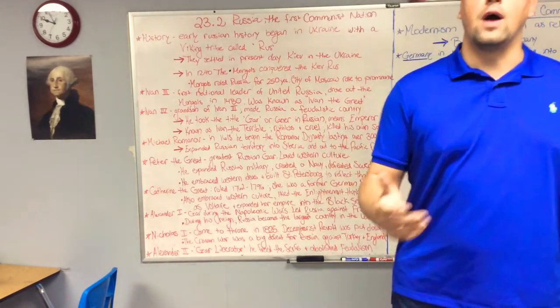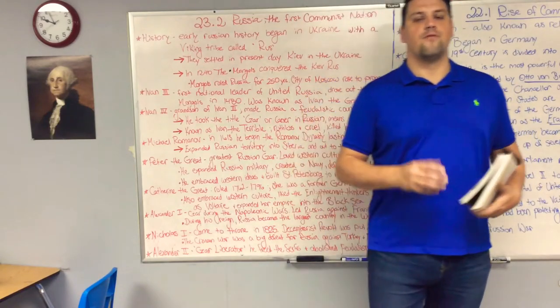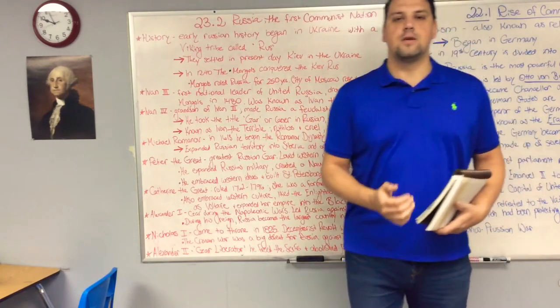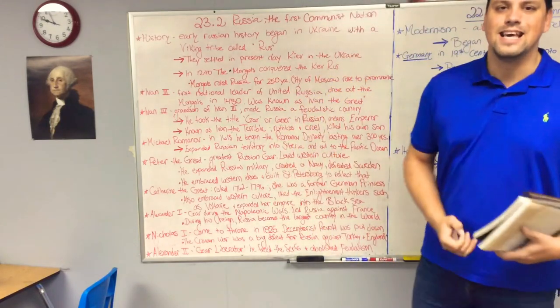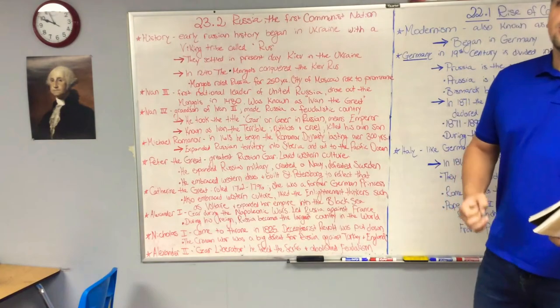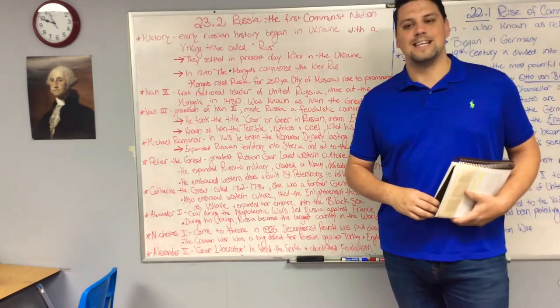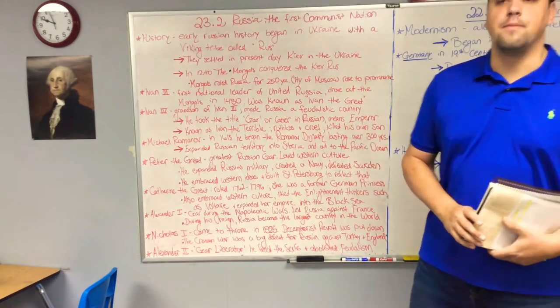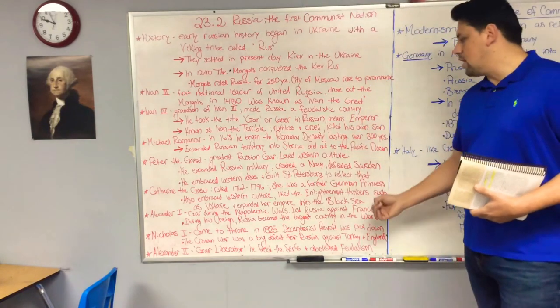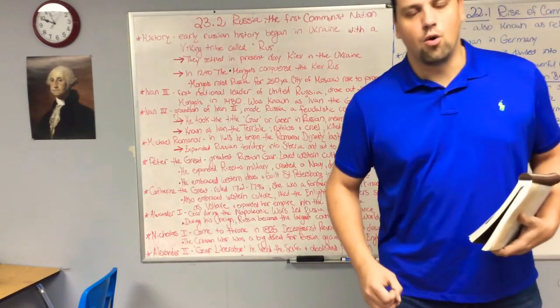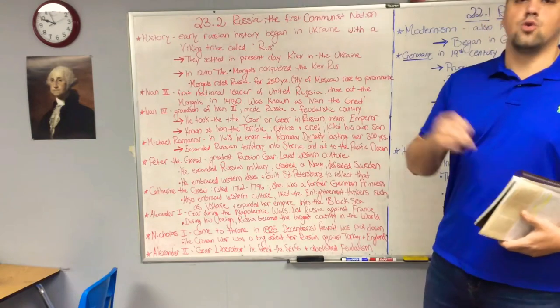It is during the reign of Nicholas the first that Russia is involved in what's called the Crimean War. Russia wants to expand its borders into the Mediterranean Sea. The way to reach the Mediterranean Sea is to take over the Black Sea. The Black Sea at this time is controlled by the Ottoman Empire or Turkey. Turkey is allied with England, France, and Spain, who don't want Russia to expand. Thus begins the Crimean War in which England, France, and Turkey defeat Russia and keep it from gaining a foothold in the Black Sea or more specifically in the Crimean Peninsula, which is in the northern part of the Black Sea where present-day Ukraine is.